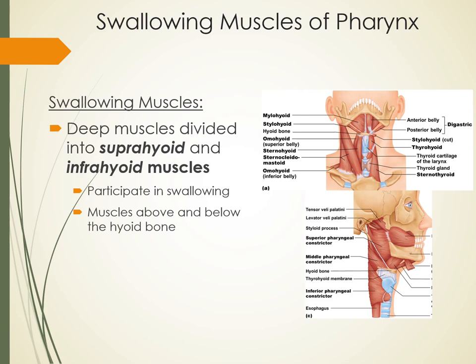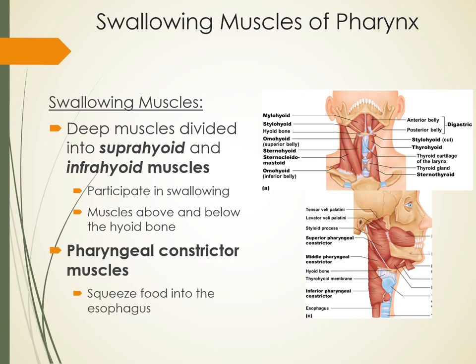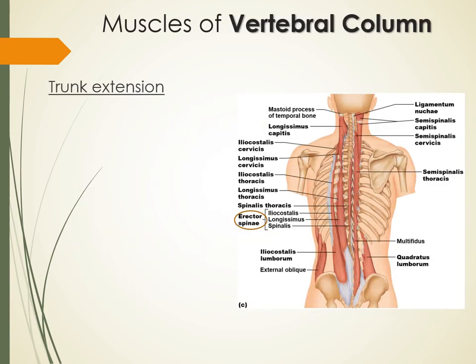There are also muscles of the pharynx that are even deeper. These help with swallowing and can be divided into suprahyoid and infrahyoid groups — above and below the hyoid bone. We also have pharyngeal constrictor muscles that are very important because they squeeze food into the esophagus as part of swallowing. Just know there are superior, middle, and inferior pharyngeal constrictors.